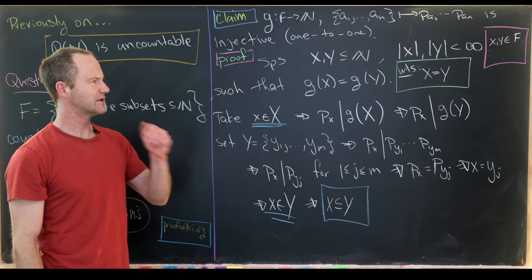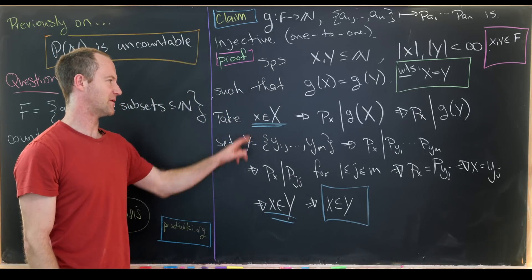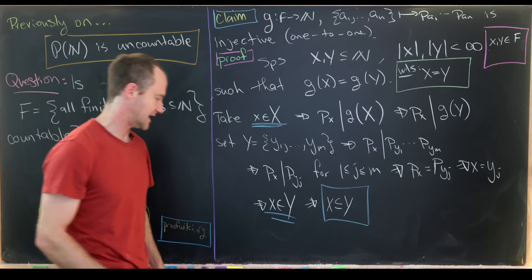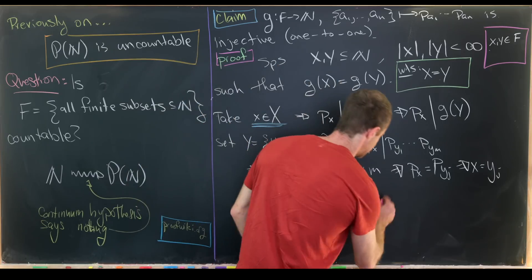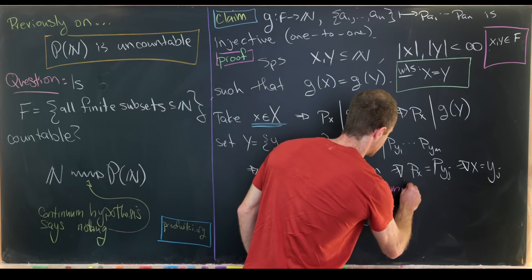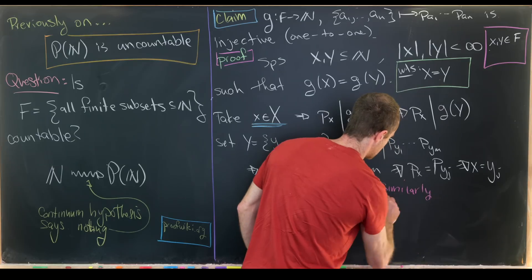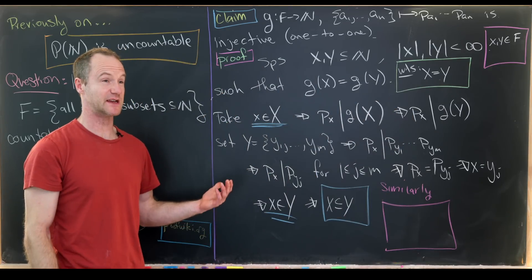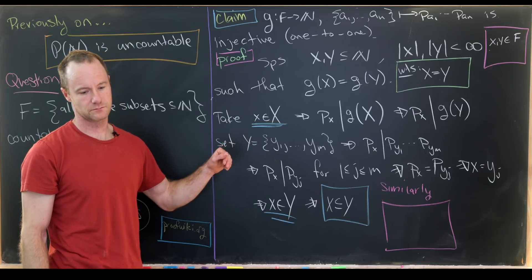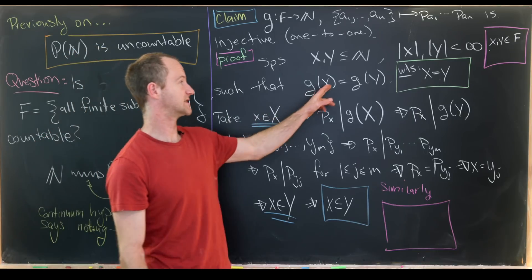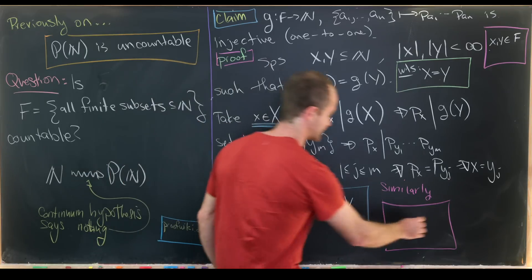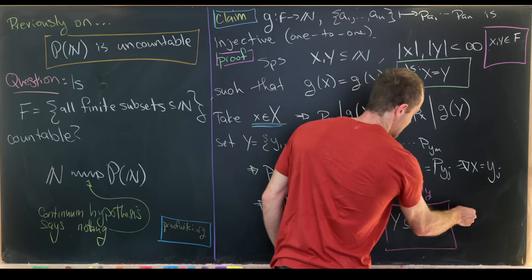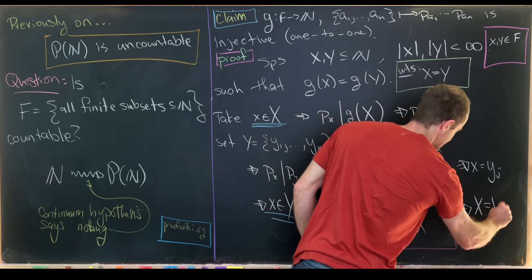Notice there wasn't anything special about starting with X. We could have started with Y instead. This is a great place to use the mathematical tool of similarity. This is based on the symmetric roles that X and Y are playing. Similarly, we can say Y ⊆ X. That means X = Y.